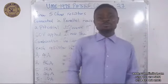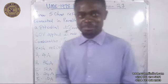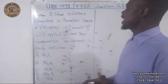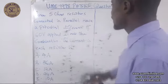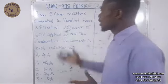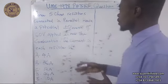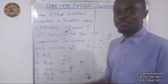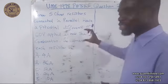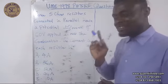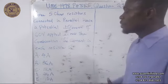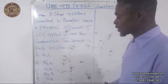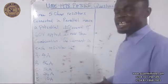Welcome to our online physics lecture series. Today we are going to take a look at UME 1978 Physics question number 27. The question says: three 5-ohm resistors connected in parallel have a potential difference of 60 volts applied across the combination. The current in each resistor is: A) 4 amperes, B) 36 amperes, C) 12 amperes, D) 24 amperes, or E) 10 amperes.